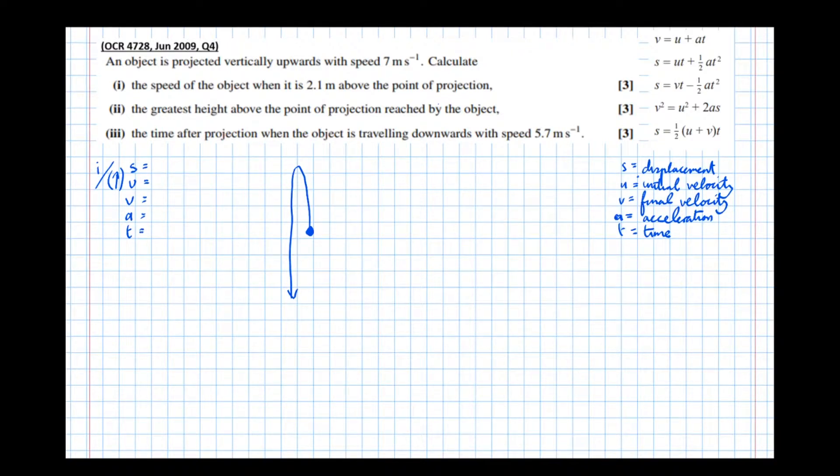So it tells us that the initial velocity is 7, i.e. u equals 7. Now if you chose your positive direction to be down, you would be minus 7, because initially it's traveling upwards at 7 meters per second. It's told us that it's 2.1 meters above the point of projection. Again, 2.1 meters up. Velocity, we don't know. That's what we're trying to find out.